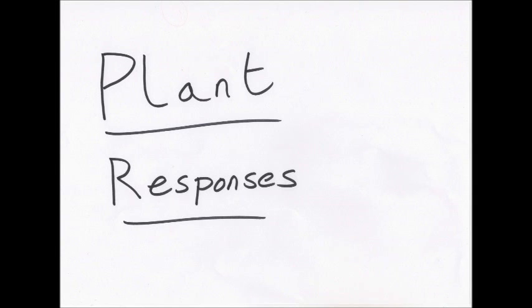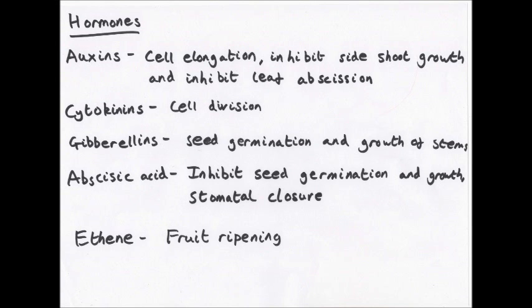Hello and welcome to my next video on plant responses. Just like animals, plants need to respond to their environment as well. Plants need to grow and get enough light and enough nutrients. The main way plants control this is using hormones, because they don't have a nervous system like animals, but they do have a hormone system.